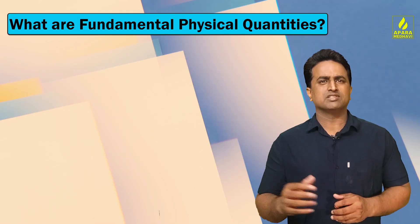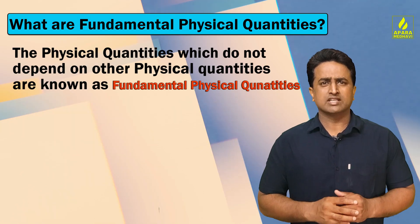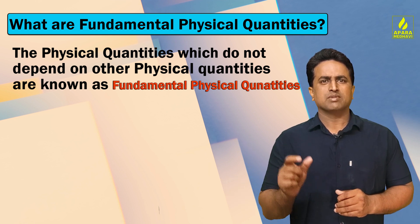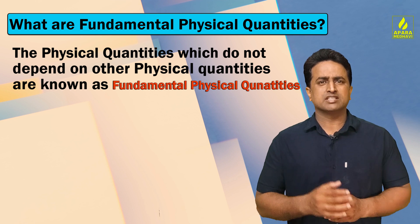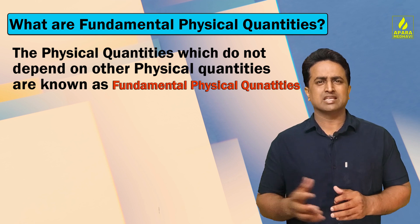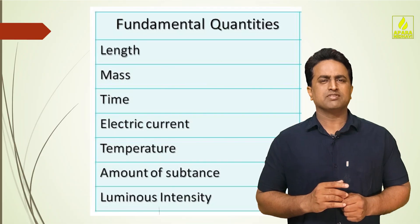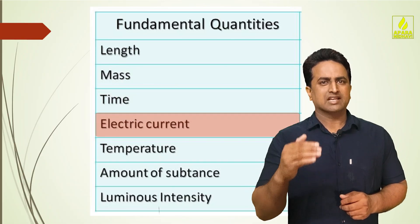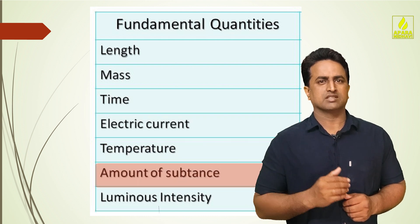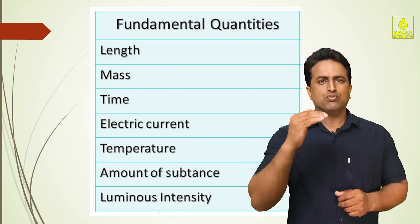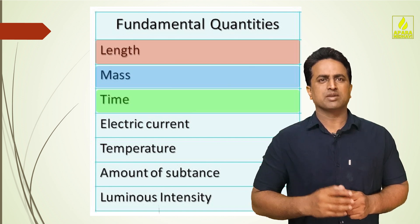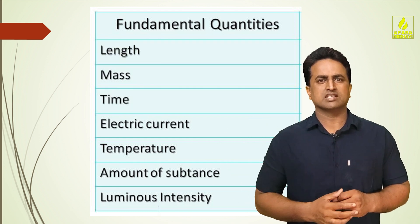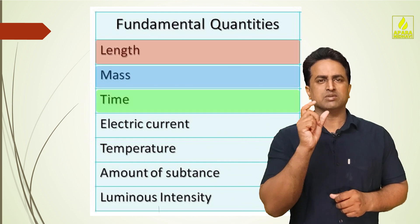What are fundamental physical quantities? The physical quantities which do not depend on other physical quantities are known as fundamental physical quantities. These are: Length, Mass, Time, Electric Current, Temperature, Amount of Substance, and Luminous Intensity. Among these, Length, Mass, and Time are very important because many other quantities are derived from these 3.